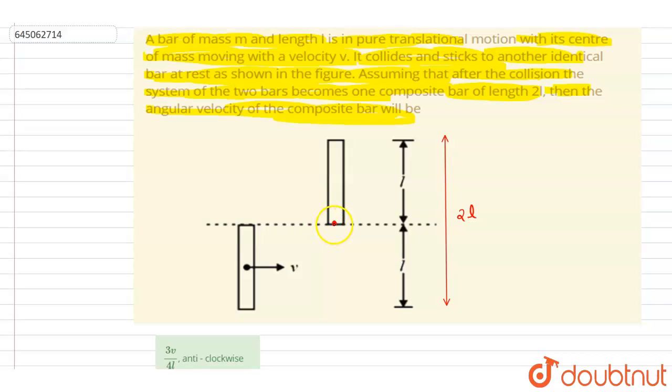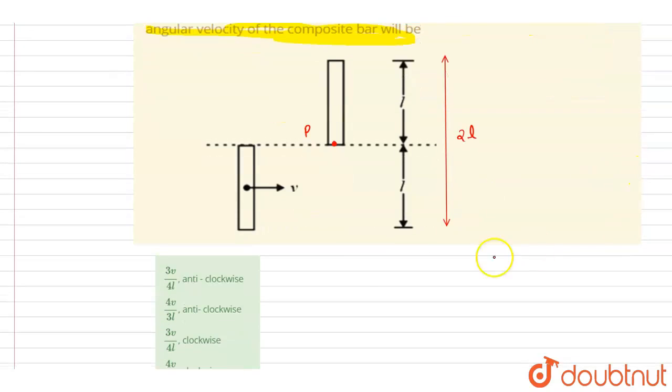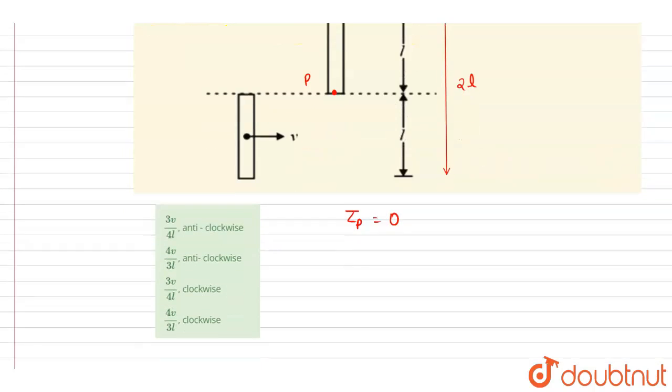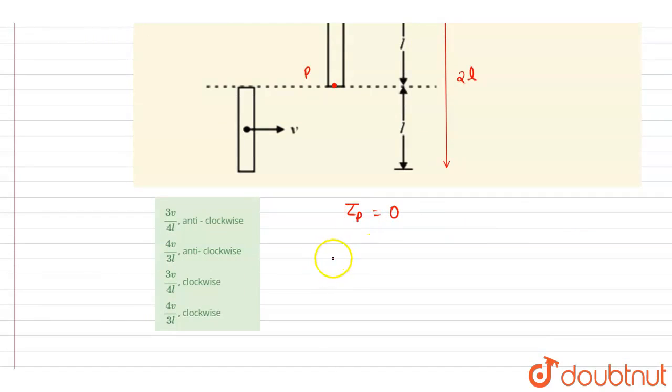If you see, when they collide they will apply forces at this point. If I take point P and write down the torque about P, it will be zero definitely because the force is passing through point P only. So angular momentum about this point P initially and finally will be same because no torque is there to change it.